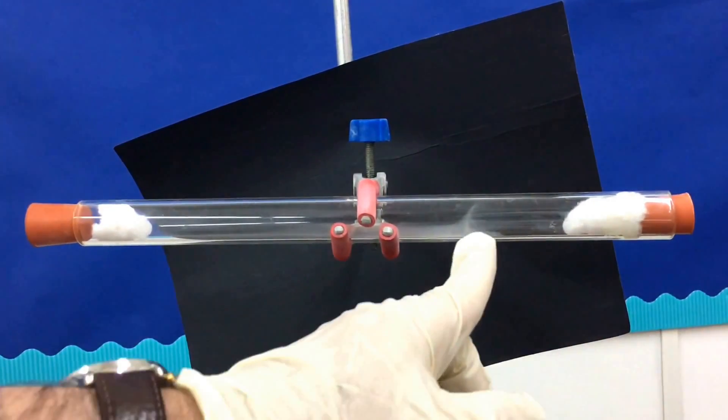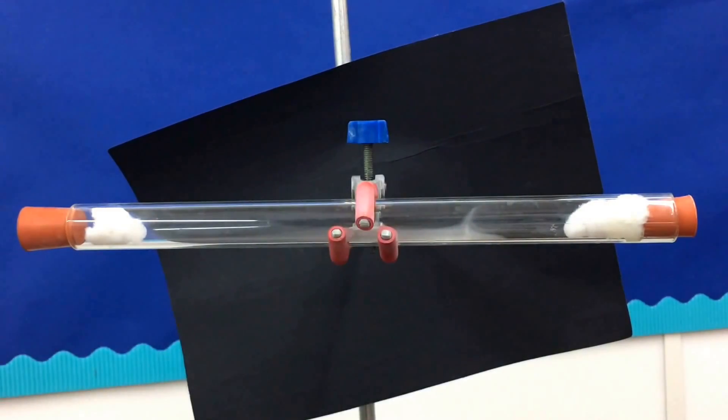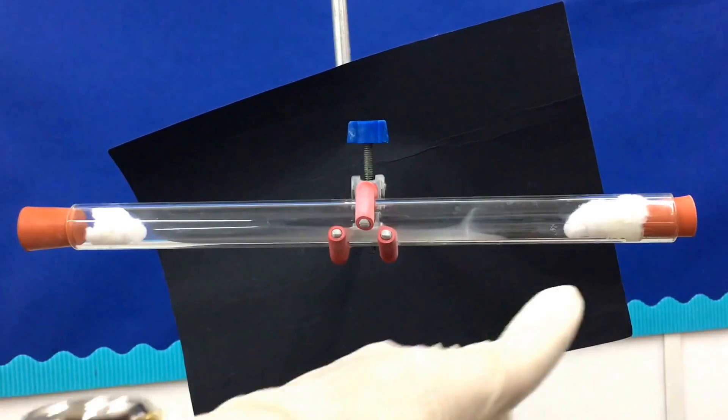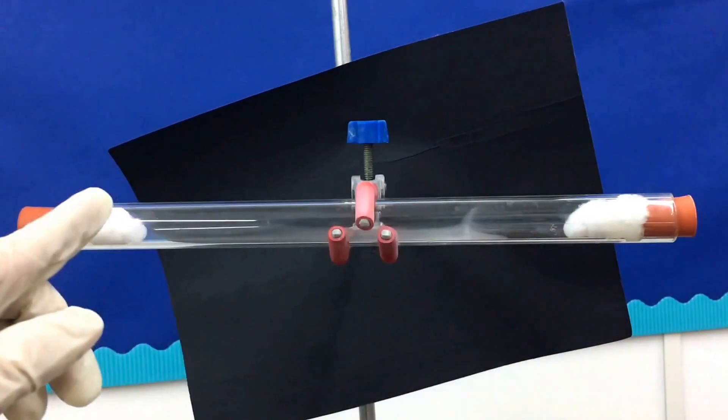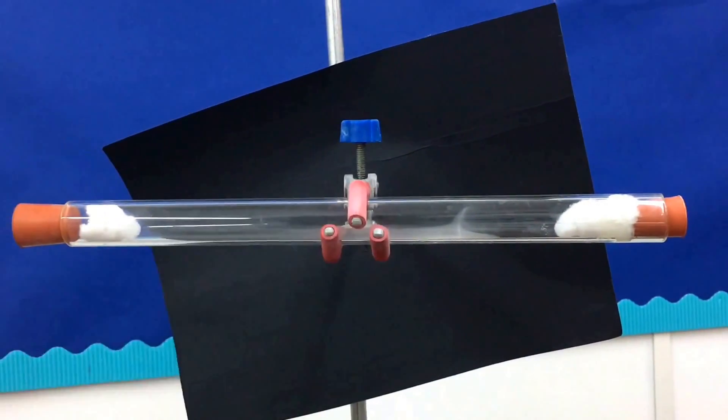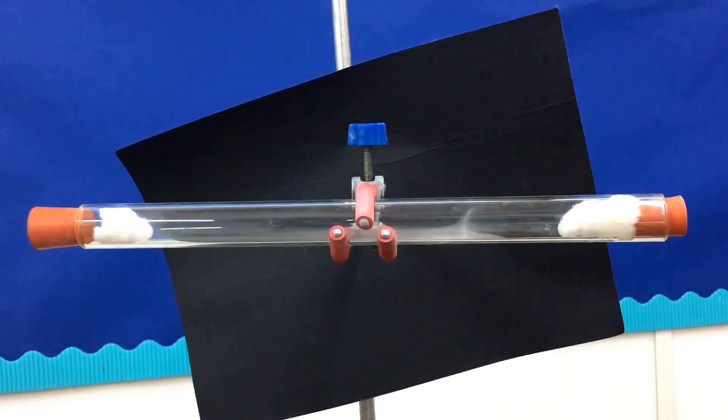As you can see we get a ring of white ammonium chloride formed. The hydrochloric acid and the ammonia diffuse along the tube and where they meet we get the NH4Cl, the ammonium chloride.